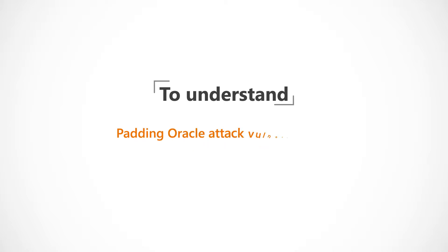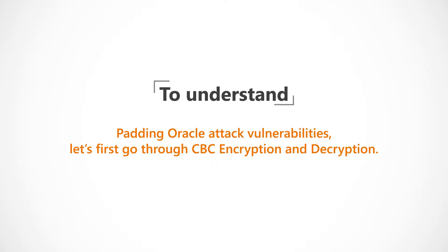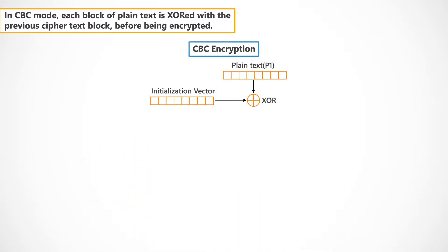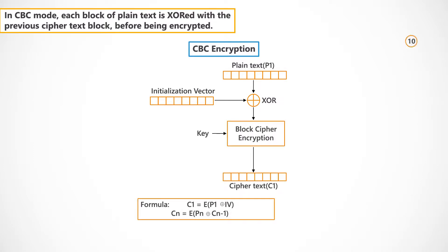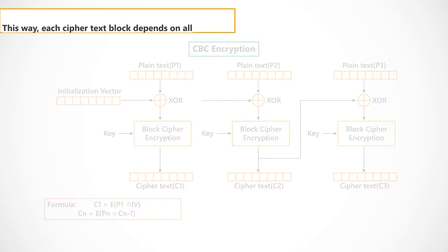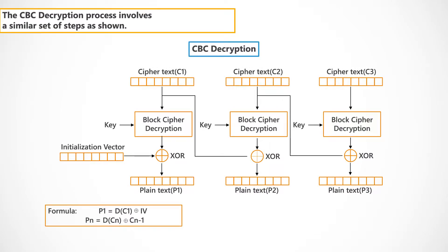To understand Padding Oracle attack vulnerabilities, let's first go through CBC encryption and decryption. In CBC mode, each block of plain text is XORed with a previous ciphertext block before being encrypted. This way, each ciphertext block depends on all plain text blocks processed up to that point. The CBC decryption process involves a similar set of steps as shown.